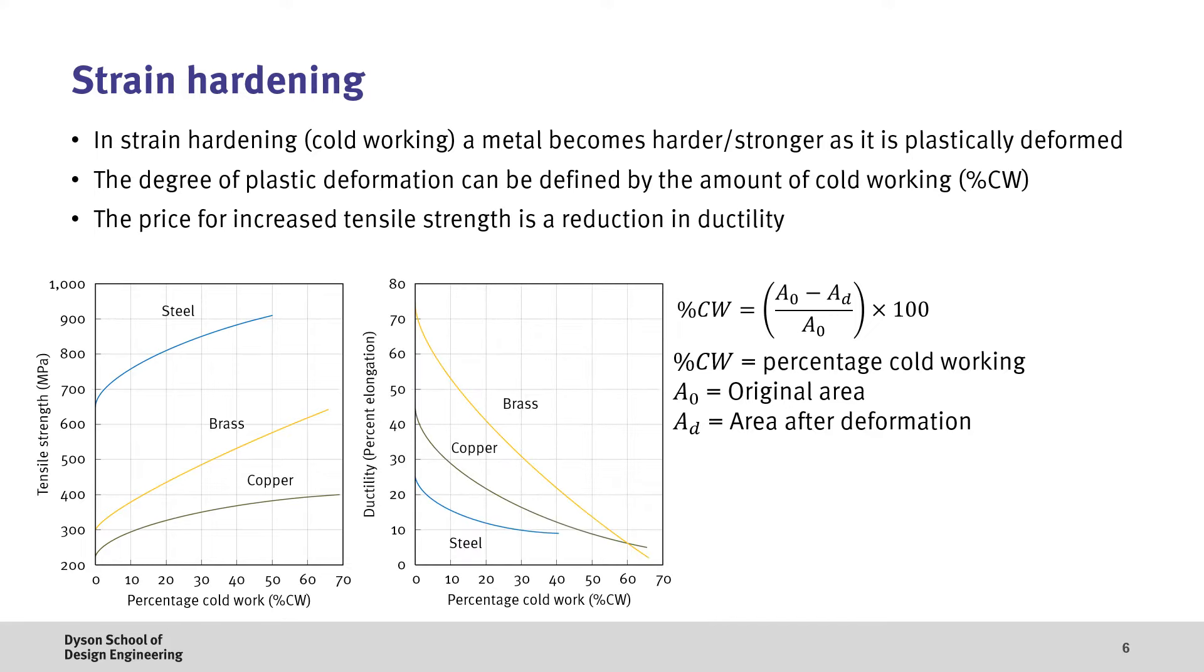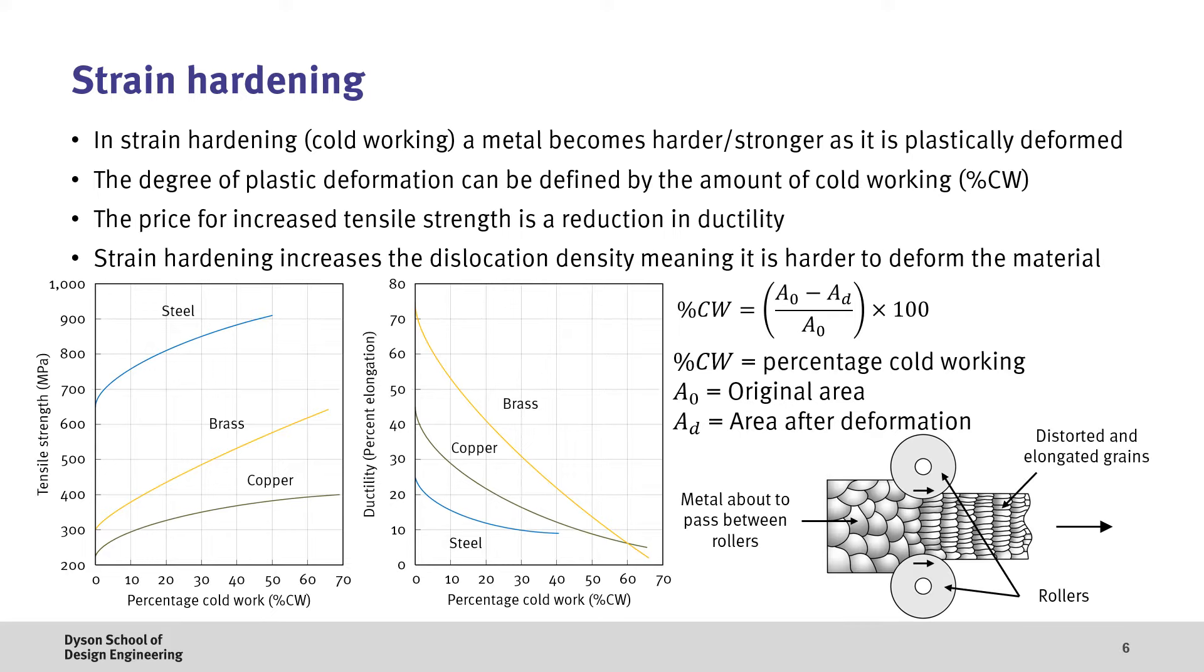However, whilst the strength of a material increases, this often comes at the cost of decreased ductility, so a balance between these two properties needs to be made. In terms of what's going on, strain hardening increases the dislocation density, therefore making it harder to deform the material as there's more dislocations per unit volume and also the grains have become smaller, providing additional barriers to their movement.